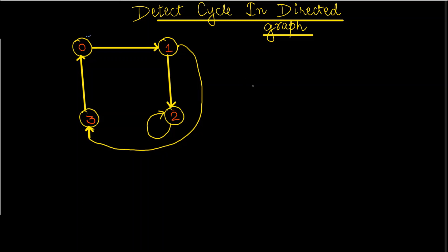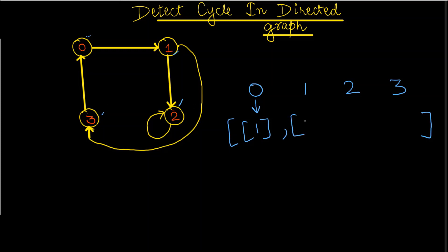Here I can see four nodes: 0, 1, 2, and 3. If I start making an adjacency array for it, 0 is going towards 1. Then 1 is going towards 2 as well as 3. 2 is going towards itself. And 3 is going towards 0. So this is all about the adjacency array.